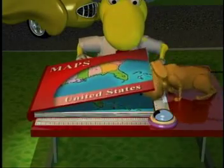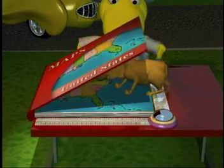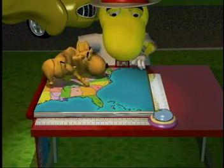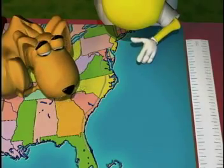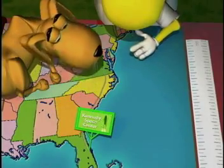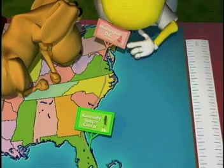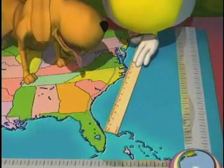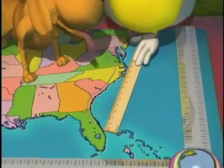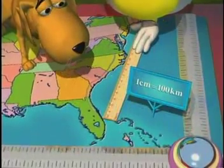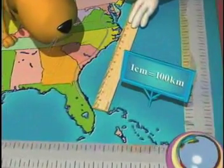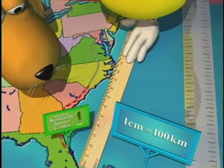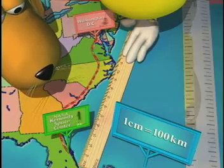One of the most common types of scale drawings is a map. Maps are very useful when planning a trip, whether it is across town or across the country. Norbert and Zott are planning to drive from NASA Kennedy Space Center to Washington, D.C. Norbert wants to estimate the distance he and Zott will travel. The scale on Norbert's map reads one centimeter equals 100 kilometers. How can he estimate the distance in kilometers from Kennedy Space Center to Washington, D.C. using the given scale?